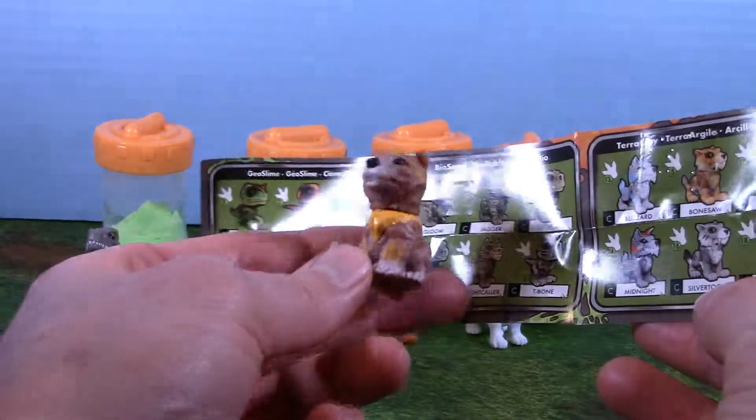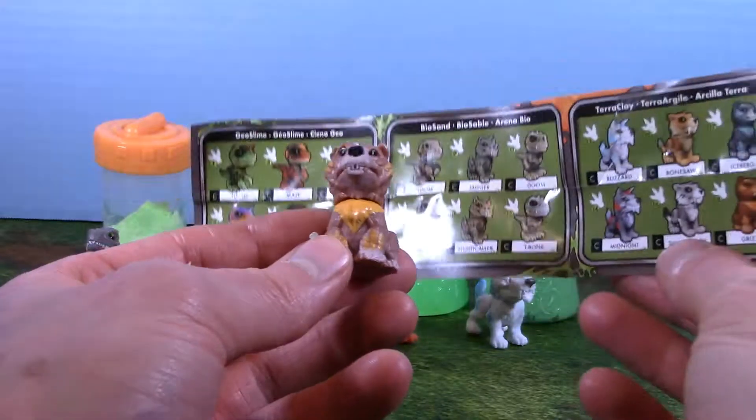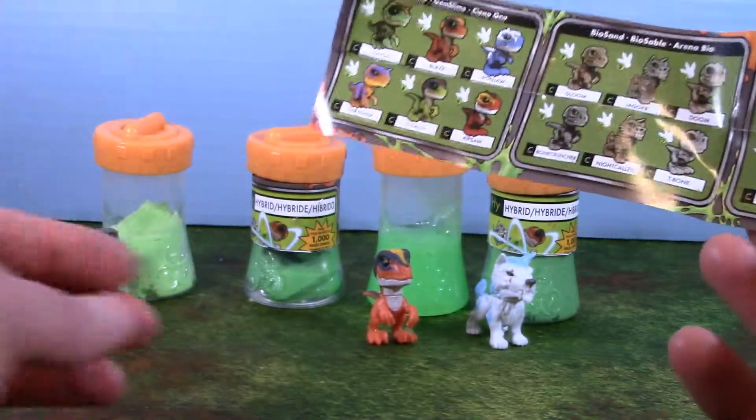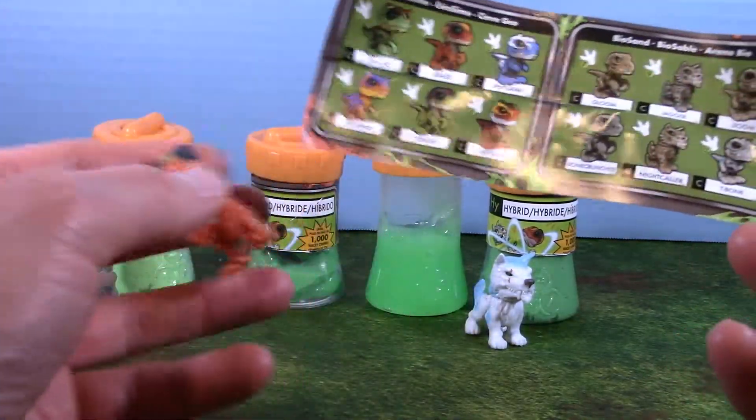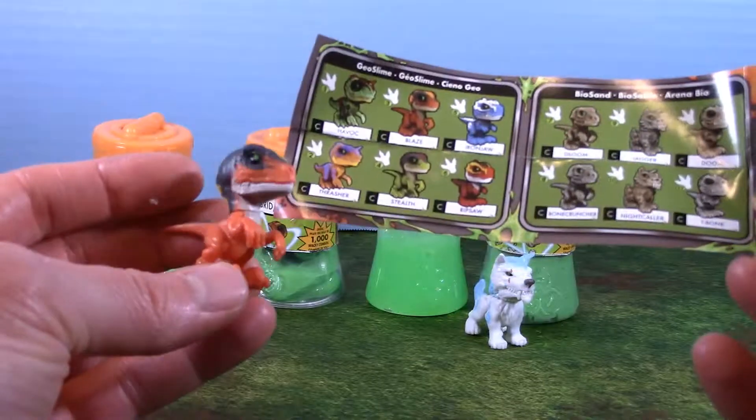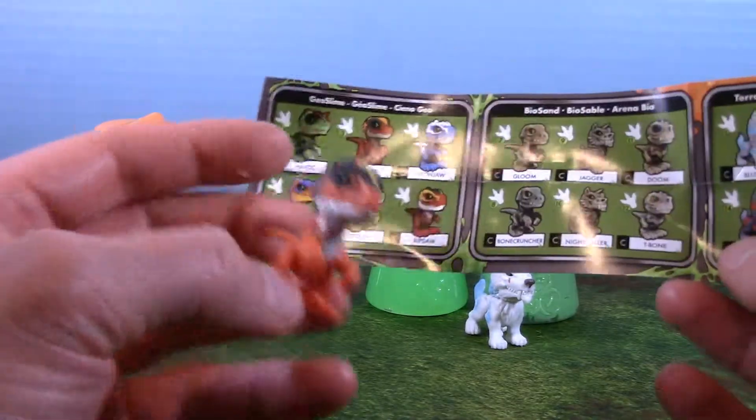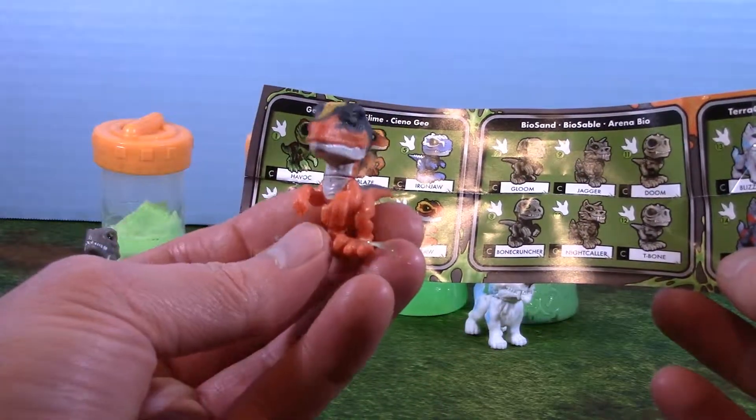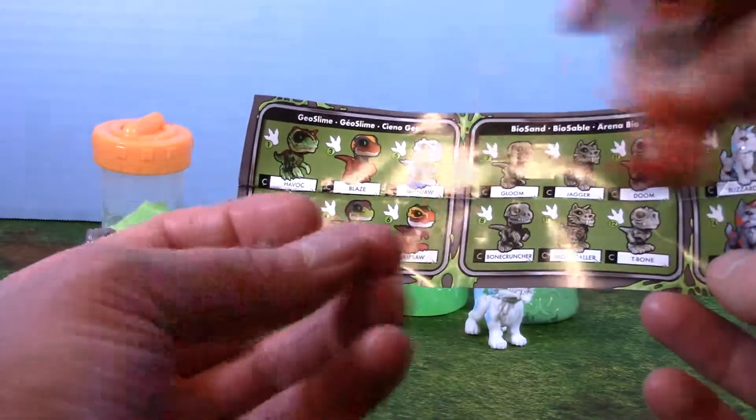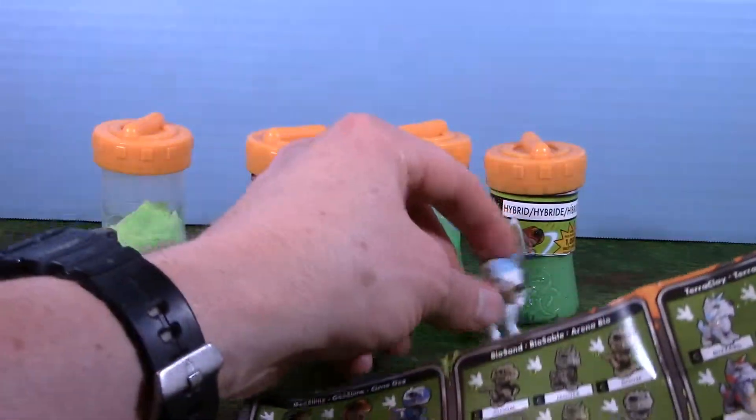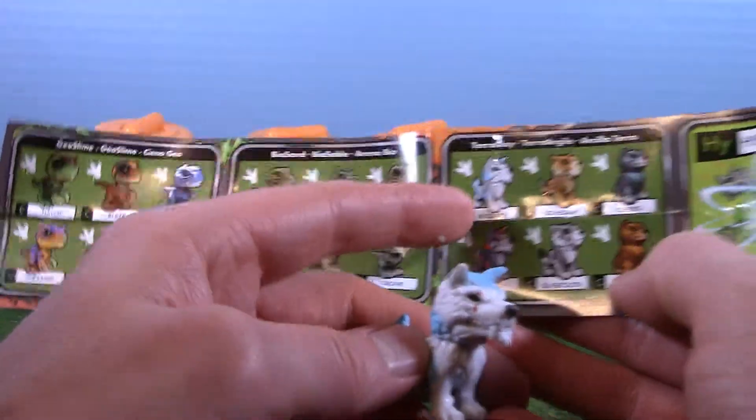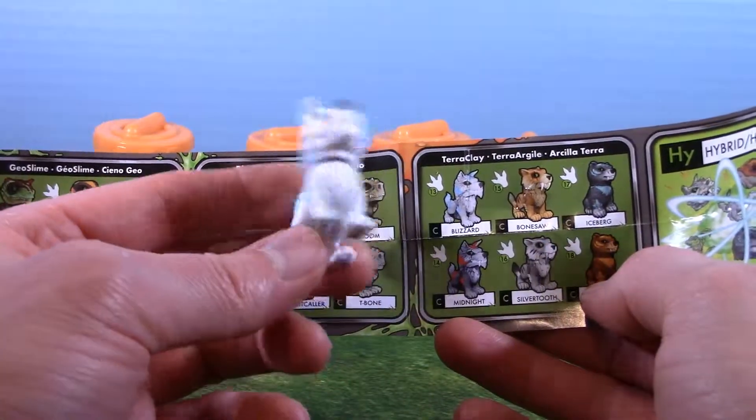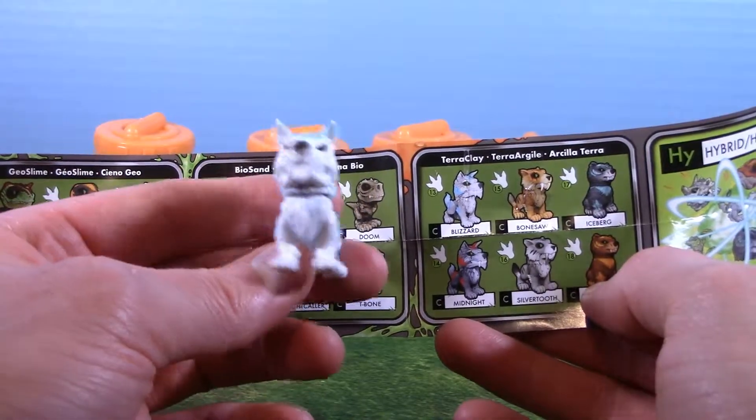Now this guy came in the actual geoslime. And he's kind of orange-ish a little bit. I'd say that's Blaze. Yeah, that definitely looks like a match for Blaze. So his cool name is Blaze. He got the slime off of him too. And this guy was in terraclay. And looks like two wolves, but only one that has blue on him. So he's Blizzard. His name is Blizzard. Howl! You tell him, Blizzard. You're barking at the moon.